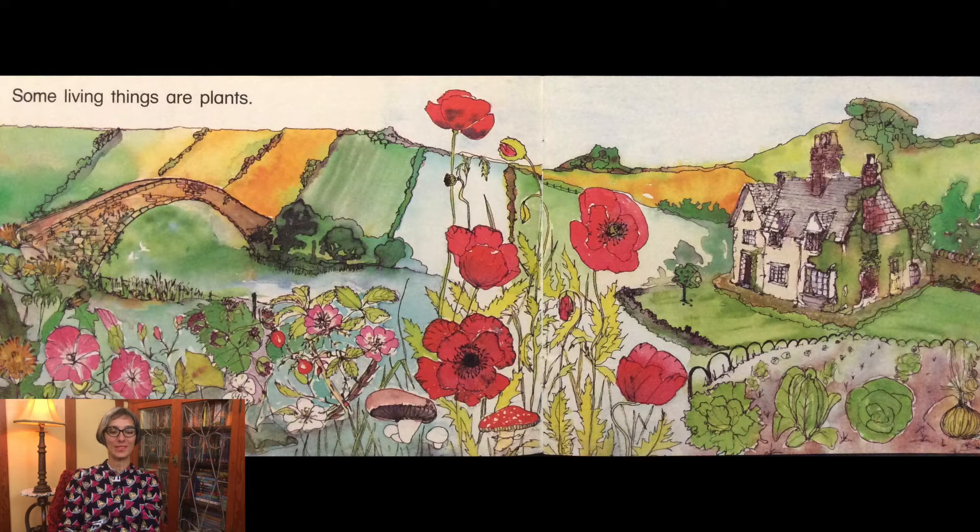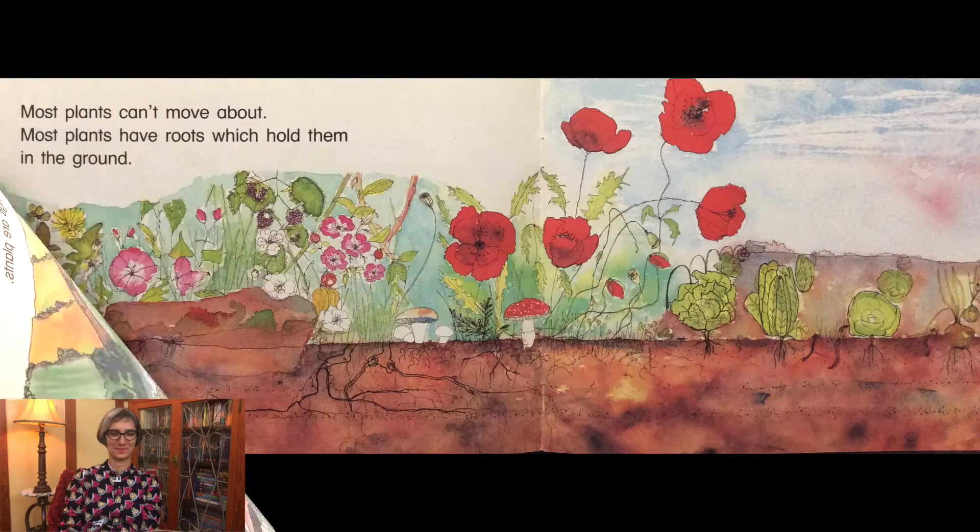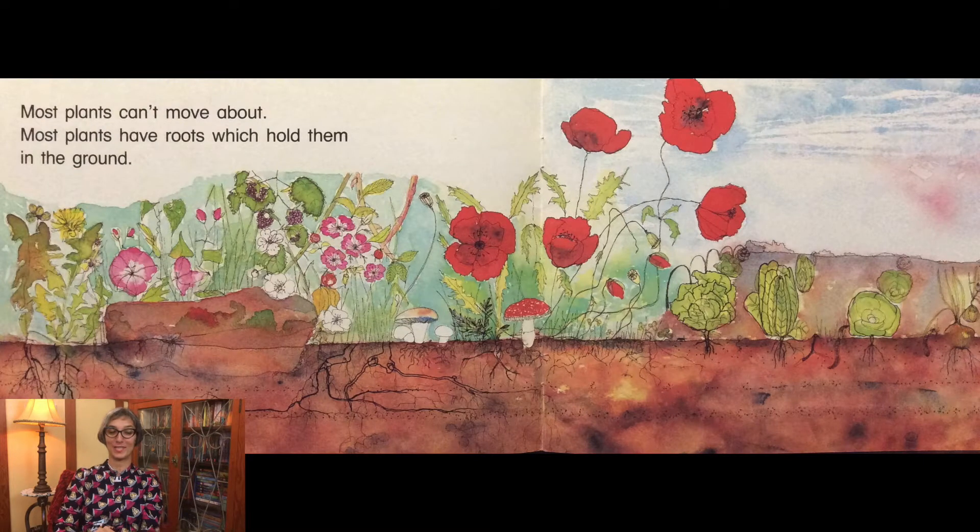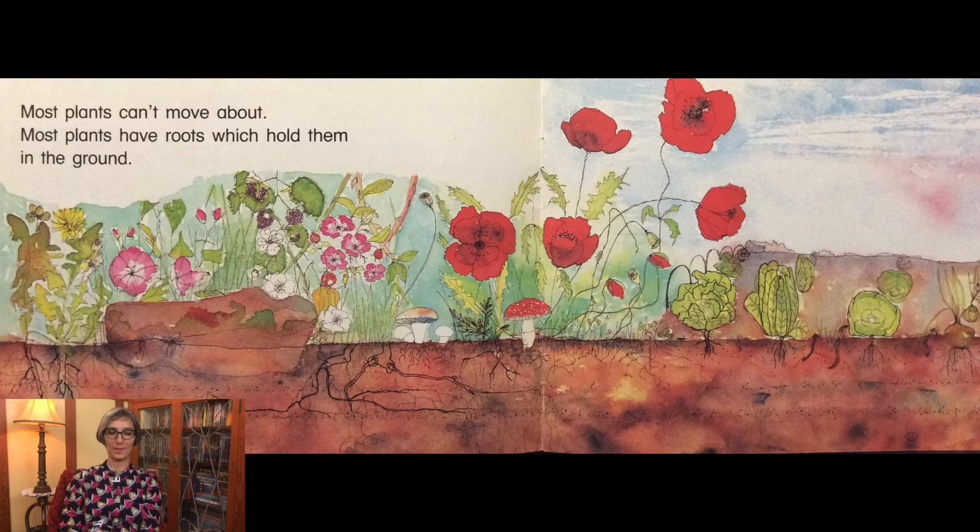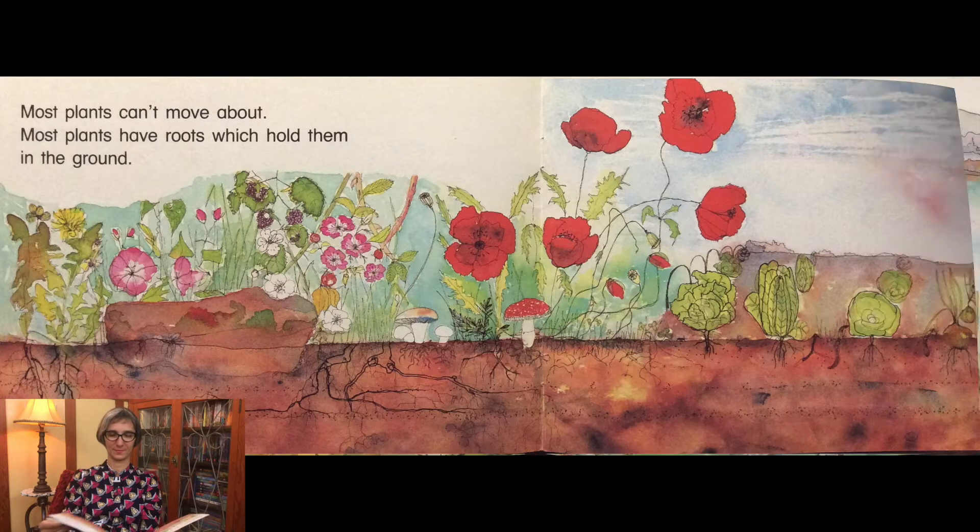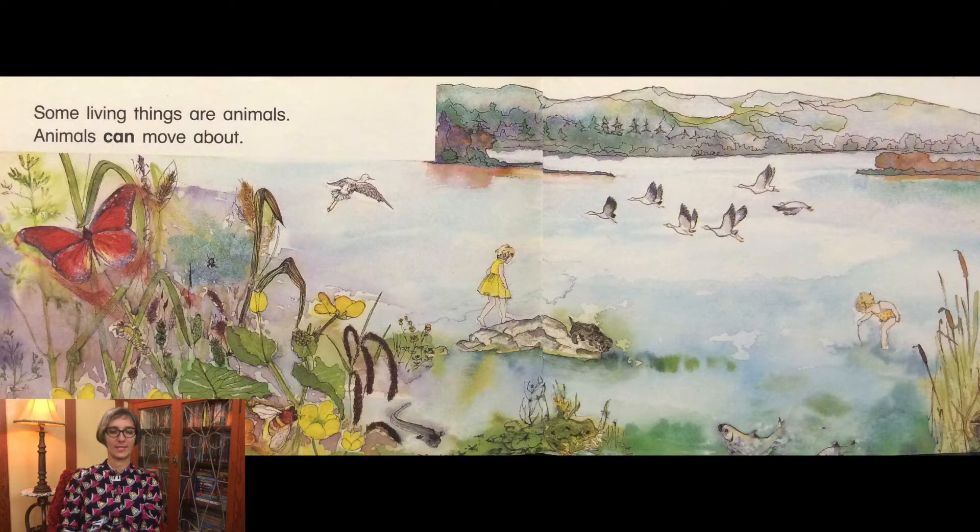Some living things are plants. Most plants can't move about. Most plants have roots which hold them in the ground. Some living things are animals. Animals can move about.